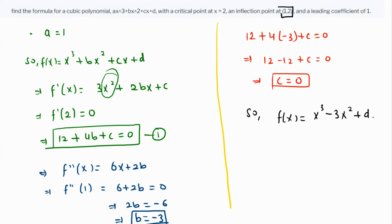The point (1,2) is an inflection point that lies on the curve, so 2 = 1 - 3 + d, which means d = 4.